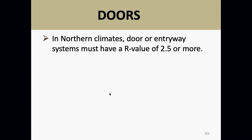That attention to detail matters when a building official reviews your Manual J — you now have to submit Manual J calculations to get permits for air conditioning systems. When the building official sees that you took the time to look at different R-values, it demonstrates competence. You are in an area covered by the International Residential Code (IRC), which requires higher R-values on doors.